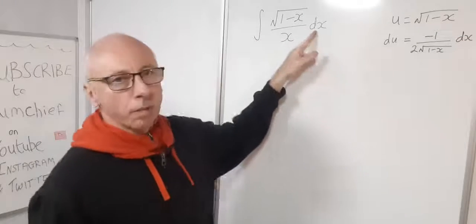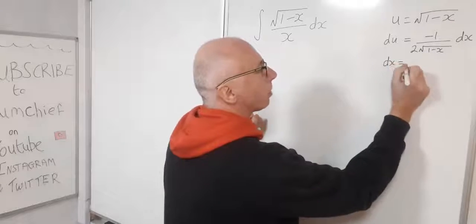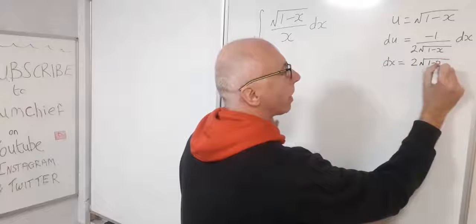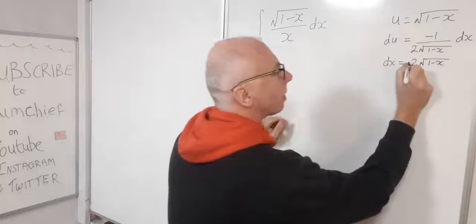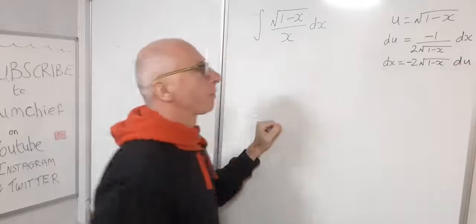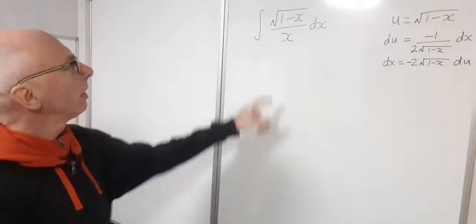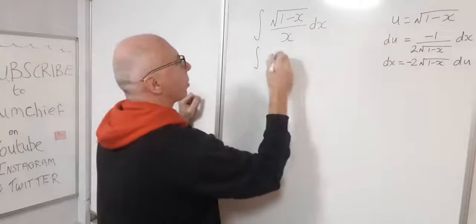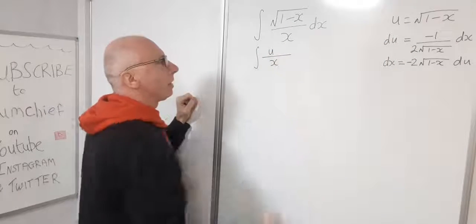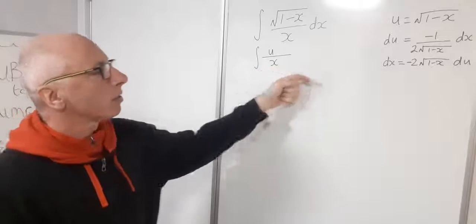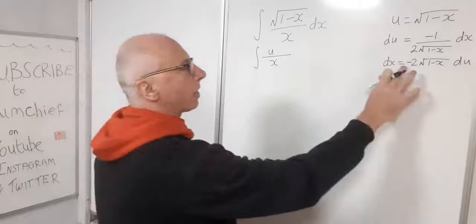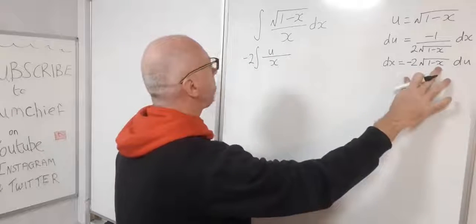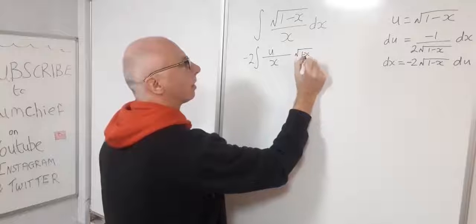Now let's isolate dx. Multiplying both sides by negative 2 times the square root of 1 minus x, we get dx equals negative 2 times square root of 1 minus x du. Transferring into our u variable, we get the integral of square root of 1 minus x — which is u — over x, multiplied by negative 2 square root of 1 minus x du.